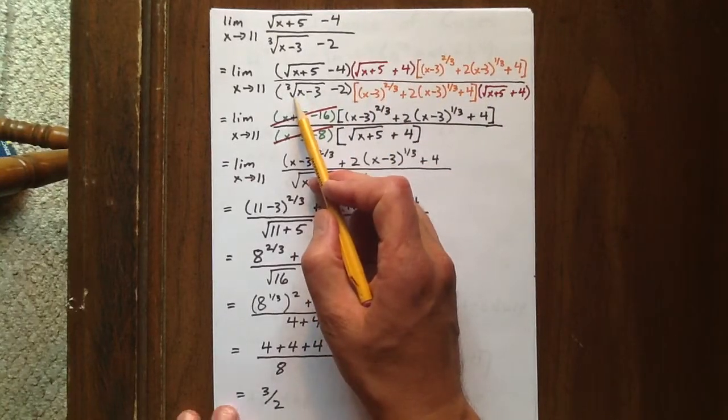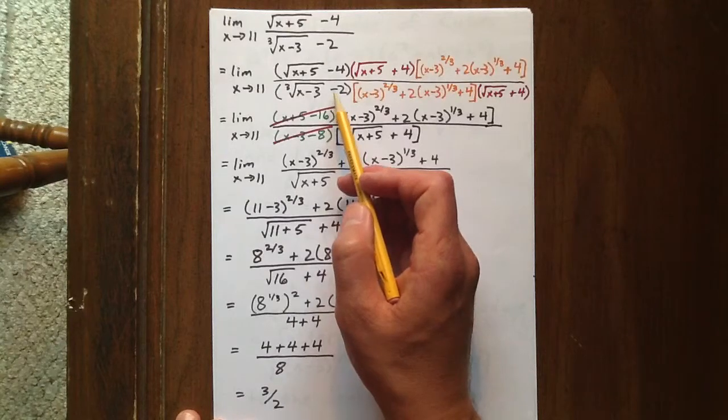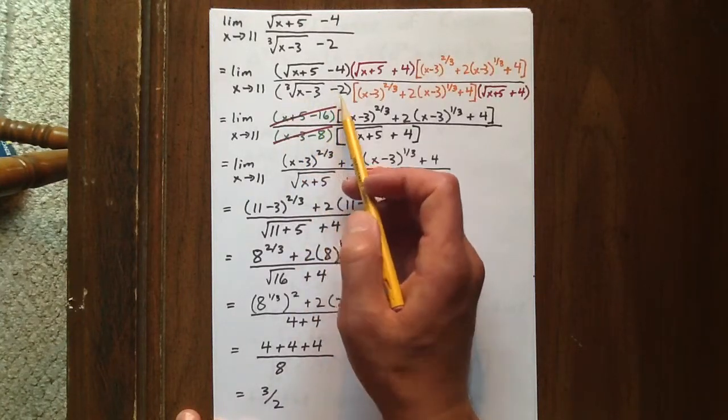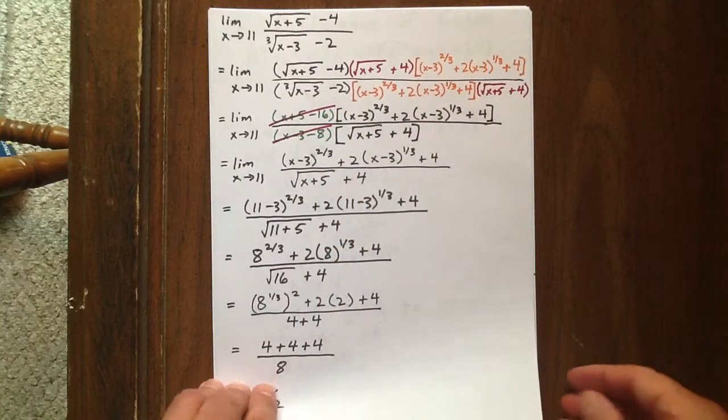However, rationalizing when we have a difference of cubes is a little more difficult for a lot of people. And sometimes they'll say the cubed root of x minus 3 plus 2, but rationalizing the difference of cubes is a little bit more complex.